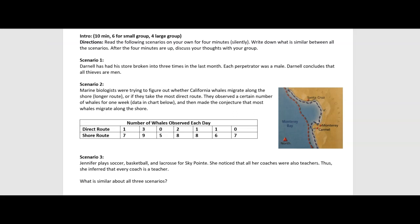Scenario one talked about Darnell. His store has been broken into three times in the last month. Every time that happened, the perpetrator was a male. So he concludes that all thieves are men.